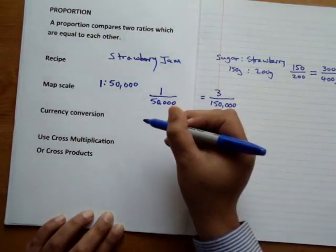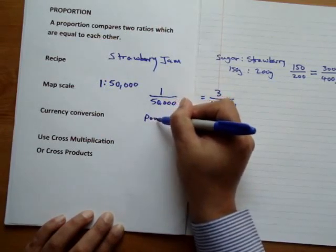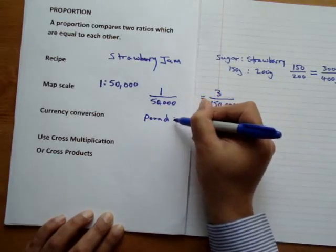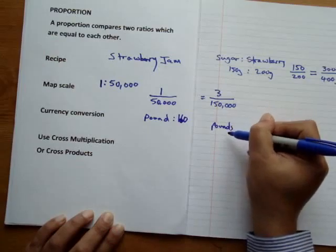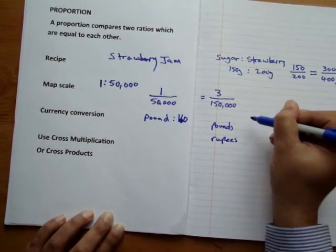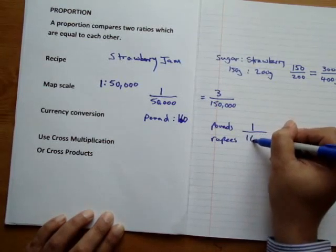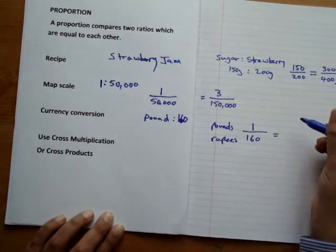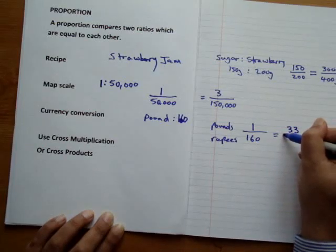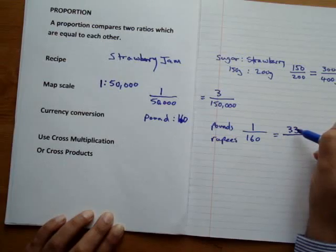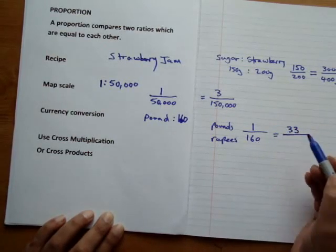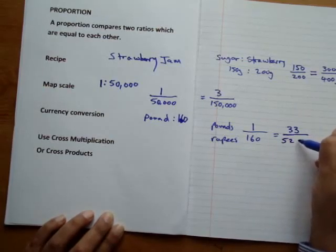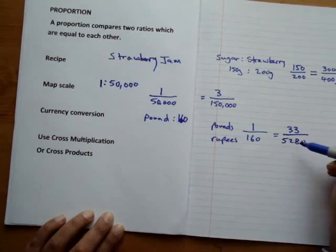For a currency example, for every one pound we get 160 rupees. So for 33 pounds, we multiply the top by 33 to get 33, and we have to multiply the bottom by the same number, giving us 5,280. So converting 33 pounds into rupees, we would get 5,280 rupees.